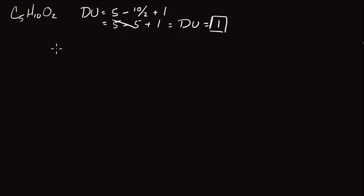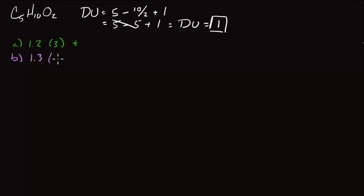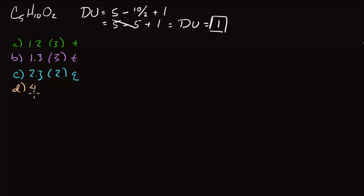The next thing we're going to do is take a look at all of the spectral data. Just like before, we'll label each peak with a letter. Peak A shows up at around 1.2 ppm, with an integration of 3 and a triplet splitting pattern. Peak B shows up a little further downfield at 1.3 ppm, with an integration of 3 and also a triplet. Peak C shows up at 2.3 ppm, integrates to two protons, and shows up as a quartet. Peak D shows up at around 4.1 ppm, integrates to two protons, and is also a quartet.